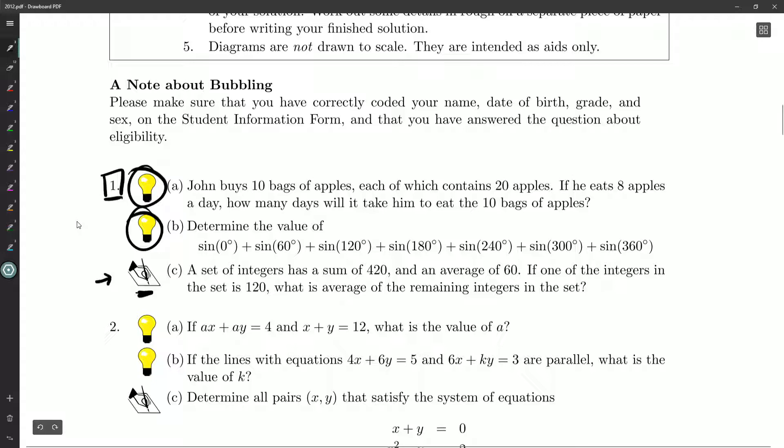Let's get into question number 1a. John buys 10 bags of apples, each of which contain 20 apples. If he eats eight apples a day, how many days will it take him to eat the 10 bags of apples? If we wanted to, we could show some work, but we know we've got 10 bags, 20 apples per bag. That gives me a total of 200 apples. We're just showing our calculations here. Now he eats eight per day. So how can we figure out how many days? You take the 200, you divide by eight, and you'll get 25 days.